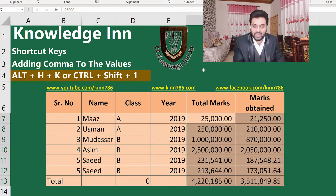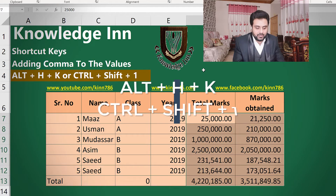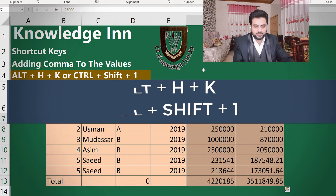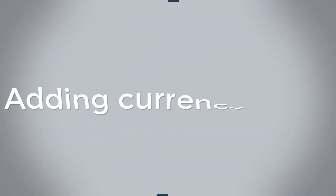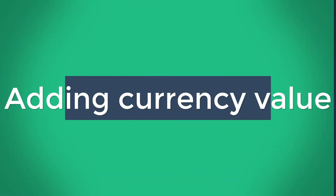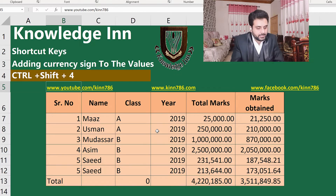If you want to add a comma to your selected cells, you have to press Alt+H+K — it will add commas. There is also another shortcut key, Ctrl+Shift+1, which is also used to add commas to your data.